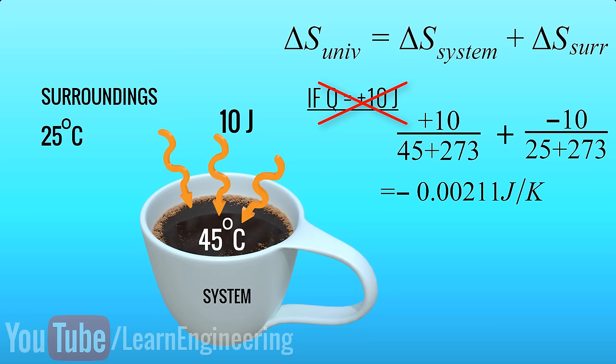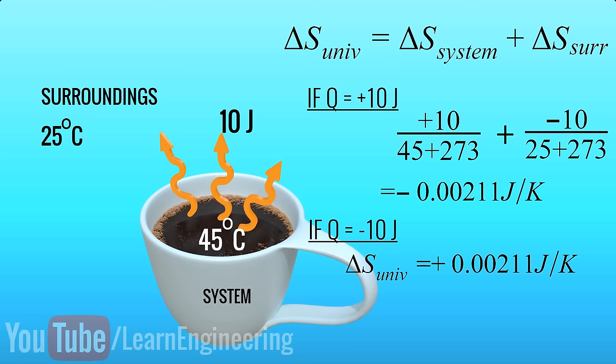Now, assume the hot tea is losing heat. So Q will be minus 10 in this case. You can see that the entropy change of the universe is positive here, and this is possible. So using the second law of thermodynamics, we have proved that the hot tea can only release heat and it cannot absorb heat.